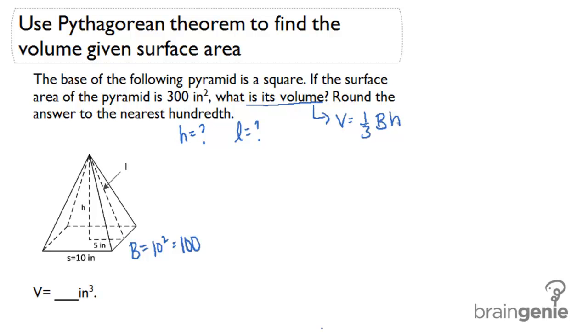I'm actually going to have to use two steps in order to figure out the h. The first step is I'm going to need to use the surface area formula to work backwards to get the slant height, or the L. And then my second step is going to be to use Pythagorean theorem to find height given the slant height.